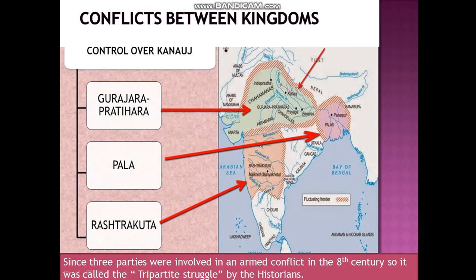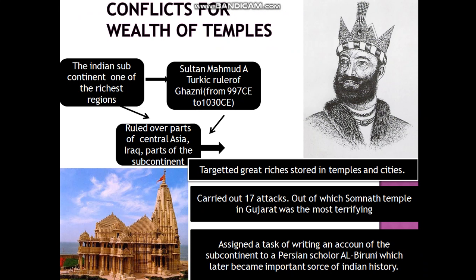A major conflict between kingdoms arose as all of them targeted Kannauj. The Gurjara-Pratiharas, the Palas, and the Rashtrakutas — all three kingdoms moved towards Kannauj and conflicted with one another to take it over. Since three parties were involved, this conflict in the 8th century was known as the Tripartite Struggle by historians.